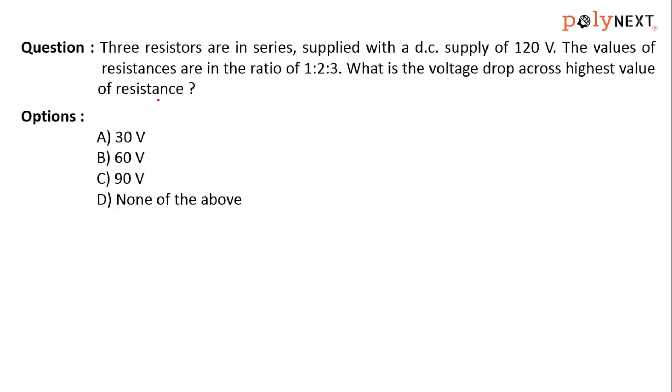Here the question is: there are three resistors with a DC supply of 120 volts. The values of resistances are in the ratio of 1:2:3. We have to find out the voltage drop across the highest value of resistance.